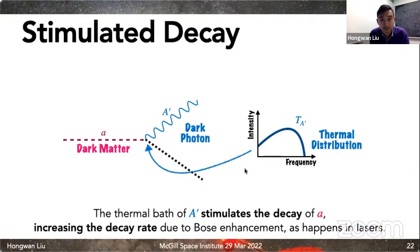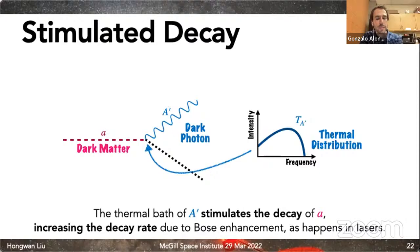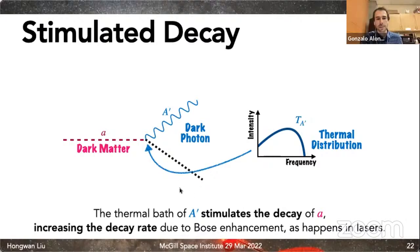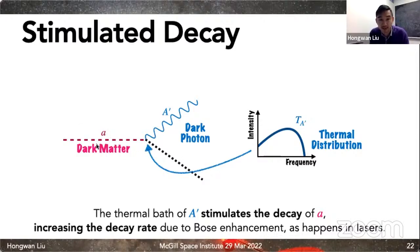There was a question about what the other particle in the two-body decay is. In some explicit models it's another dark photon, different from the one we described. In general it doesn't really matter what it is — it could also be like a dipole transition from an excited state down to a ground state.